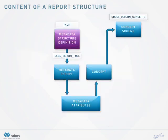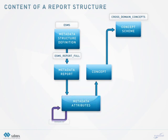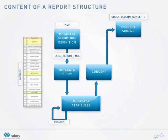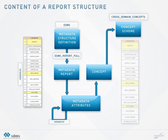The report structure is defined in the metadata structure definition. It details the metadata attributes used to represent the reference metadata. Metadata attributes are organized according to child-parent relationships to define a hierarchy. Each of them takes its semantic in a concept scheme in which a representation can be defined, such as format and codelist.